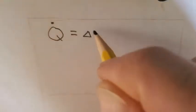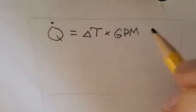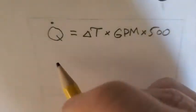Using the simple equation, rate of heat transfer, or Q, equals delta T times GPM times 500.